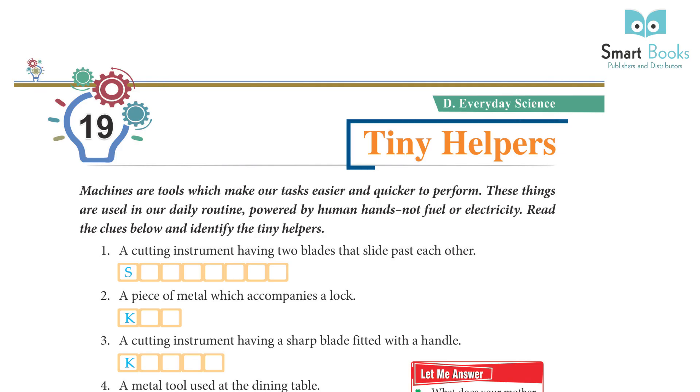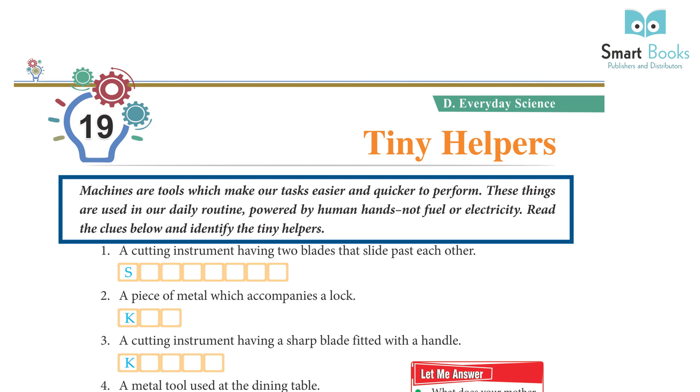Chapter 19 Tiny Helpers. Machines are tools which make our task easier and quicker to perform.